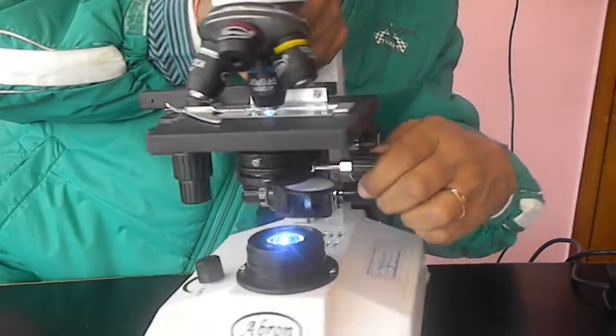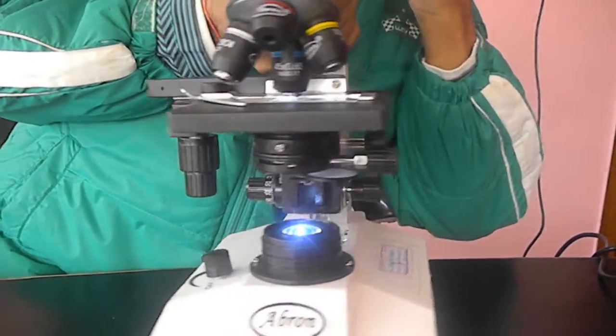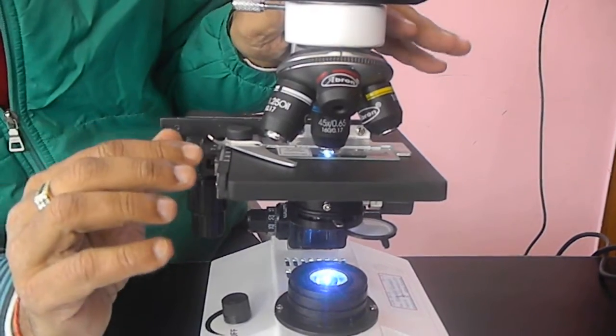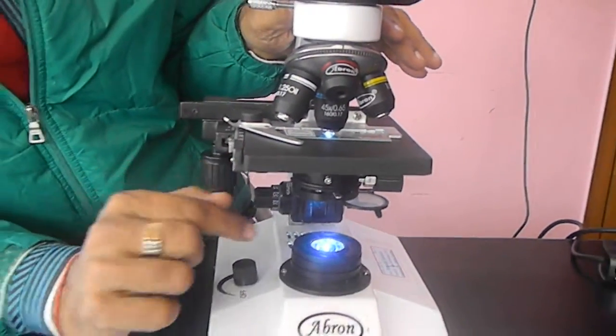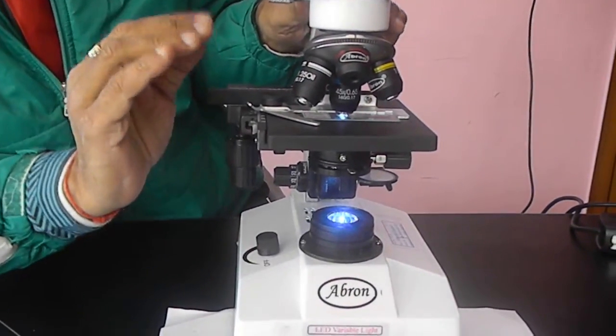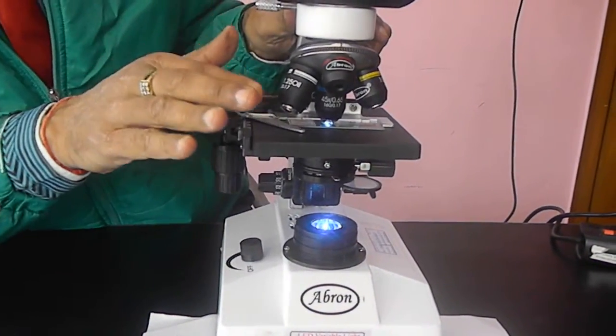And adjust a bit of condenser so that you get the better clarity of the objectives. The best way is to have the clarity only by adjusting the condenser and the iris. The light will be sharper and you will have very good results.